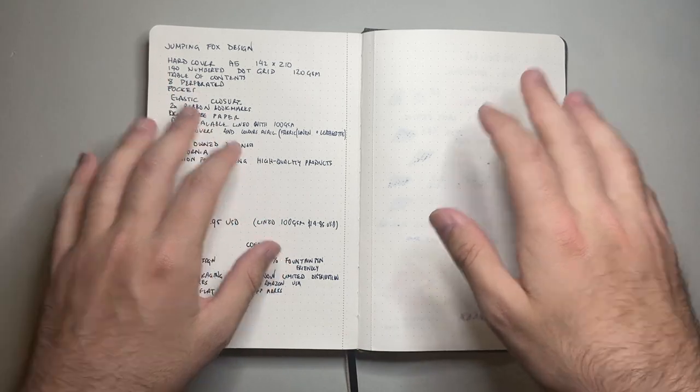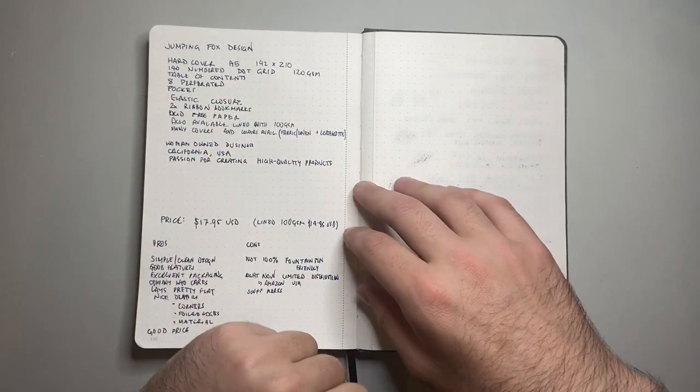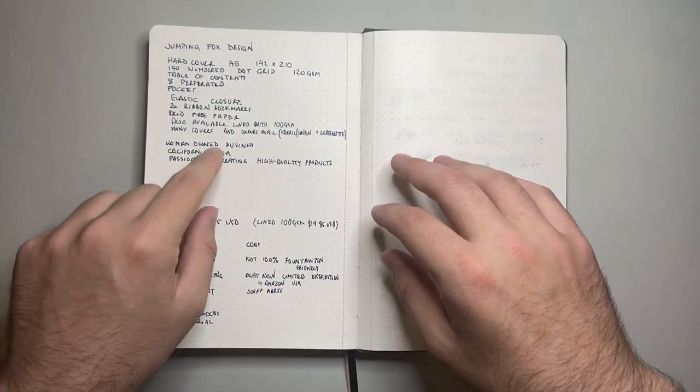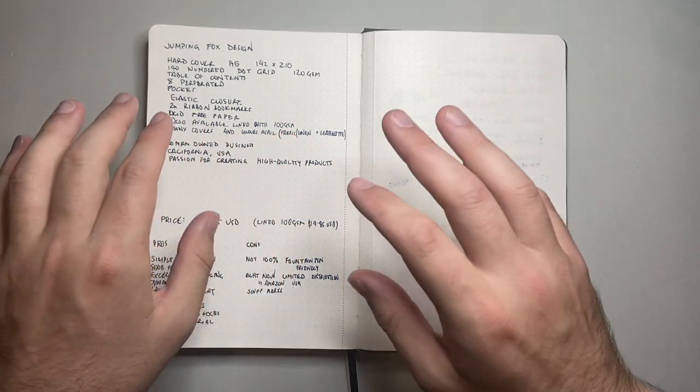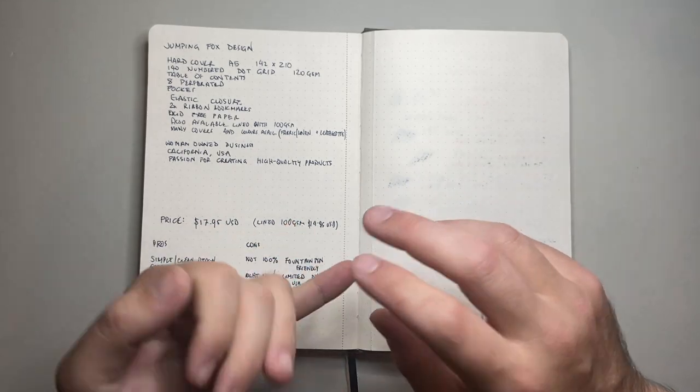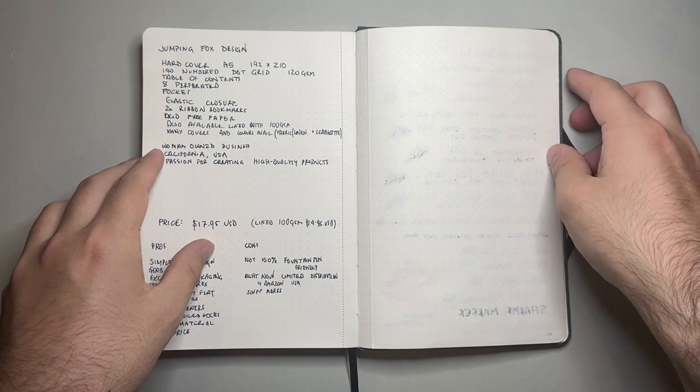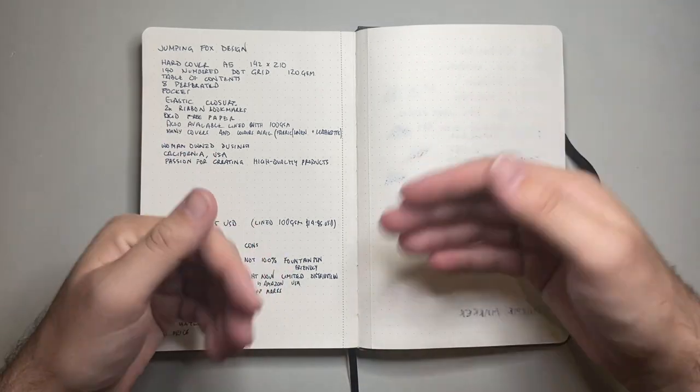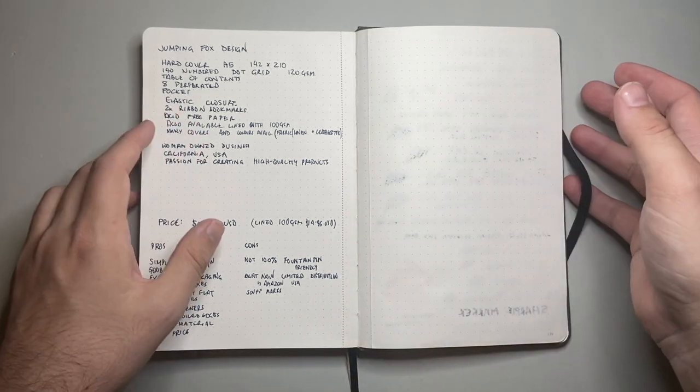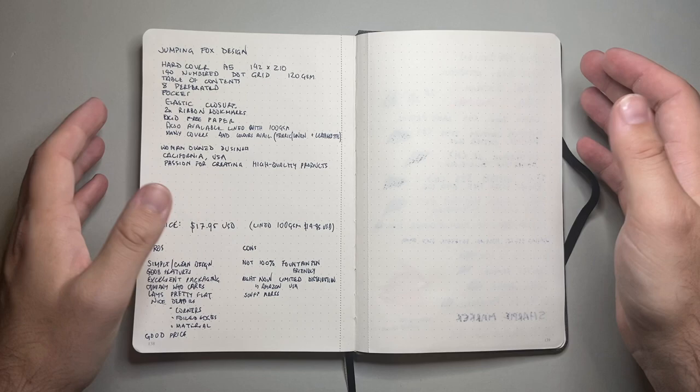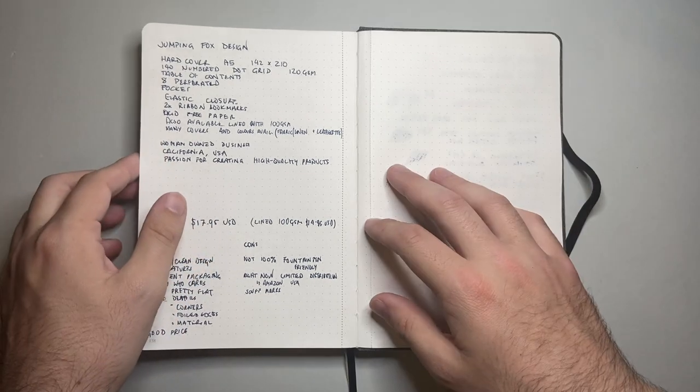Now, these books come in two different versions. This is the linen or fabric version with the dot grid, which is at 120 GSM. It also comes in a lined version, which uses 100 GSM paper. And there are lots of different covers and colors in the fabric linen version like this, and also a leatherette version. So something for everyone, lots of different colors and materials. This is a woman-owned business, and they're proud of that, and I think that's absolutely wonderful. It's based in California in the USA, and they have a passion for creating high-quality products.